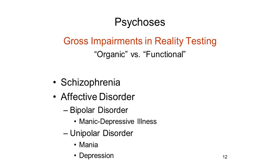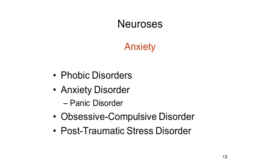We'll talk more about the neural substrates, especially the biochemical substrates, of schizophrenia and affective disorder later in these lectures. In contrast to the psychoses, the neuroses are a set of syndromes that share primary symptoms of anxiety in common. Like psychosis, neurosis is no longer a technical term in psychiatry and clinical psychology, but you'll still hear it quite a bit, and the term lives on in neuroticism, one of the big five personality traits.